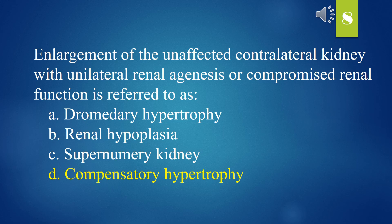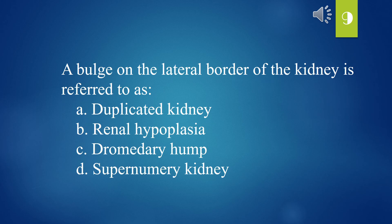A bulge on the lateral border of the kidney is referred to as: A. Duplicated kidney. B. Renal hypoplasia. C. Dromedary hump. D. Supernumerary kidney. The answer is C. Dromedary hump.